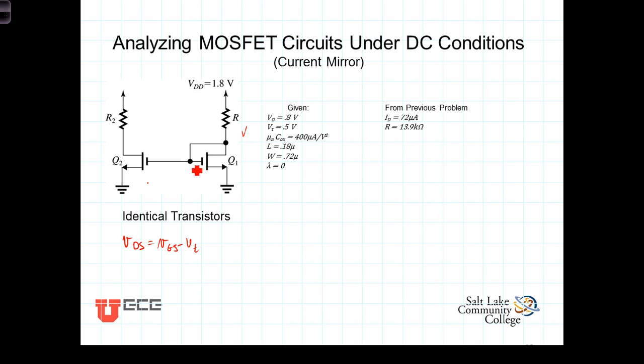Now where these two transistors are different is that in this transistor it was biased so that the voltage here was 0.8 volts. And because the drain and the gate are tied together, that tells us then that VGS in this is 0.8 volts.